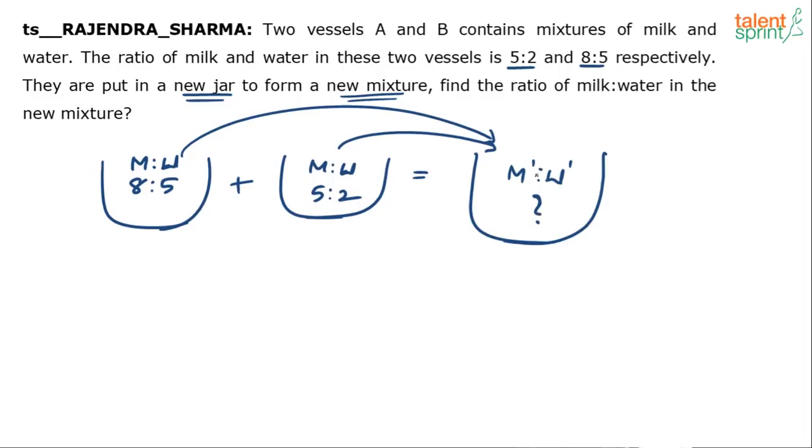How will I get the ratio of milk and water in the new mixture unless I know about the quantities Q1 and Q2? Either the quantity should be given or the ratio of the quantities has to be given.